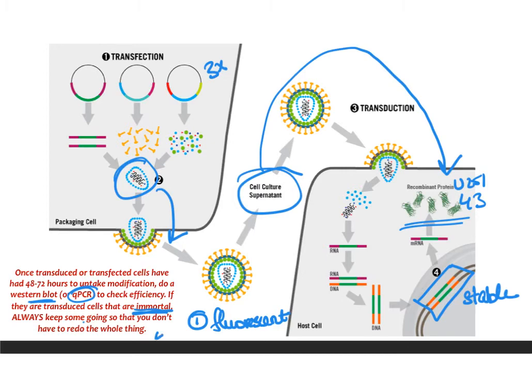For primary cells like 43s or PDX lines, you have to decide how worthwhile it is to propagate this line through flanks. Some people say this is a line they use all the time and will propagate it, while others prefer to freeze some stock and use it for about five passages and then redo the process. But if it is a U251 line, you have the option of keeping it forever — and you should.